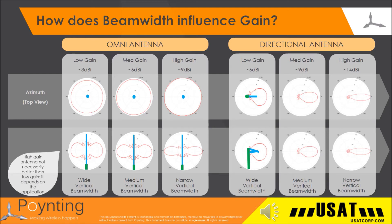Applications where a low gain directional would be good is a Wi-Fi hotspot like in the corner of a warehouse where it would have great gain in a 90 degree angle.